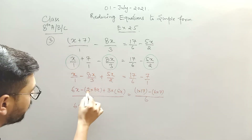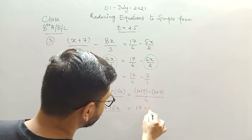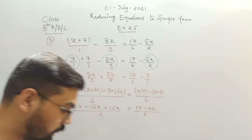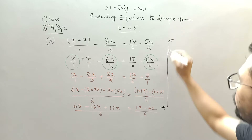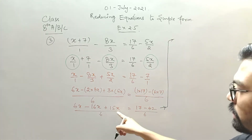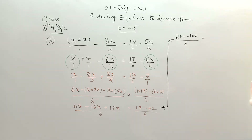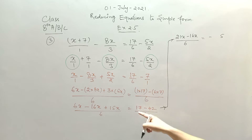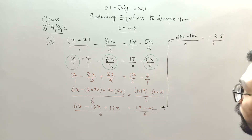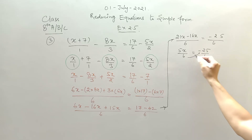Now 6x minus 16x plus 15x divided by 6. This gives 6x plus 15x minus 16x, which is 21x minus 16x divided by 6. On the RHS, this is 17 minus 42 divided by 6, giving minus 25 divided by 6. So 21 minus 16 gives 5x divided by 6 equals minus 25 divided by 6.